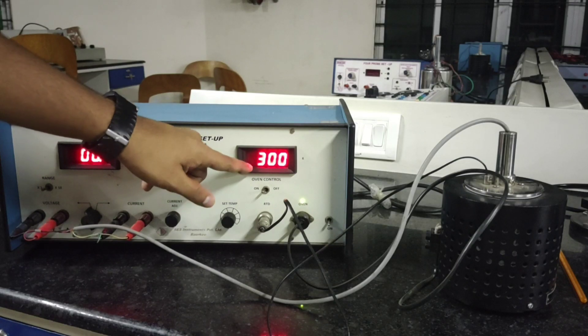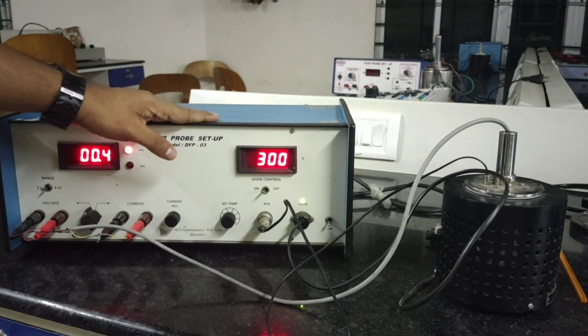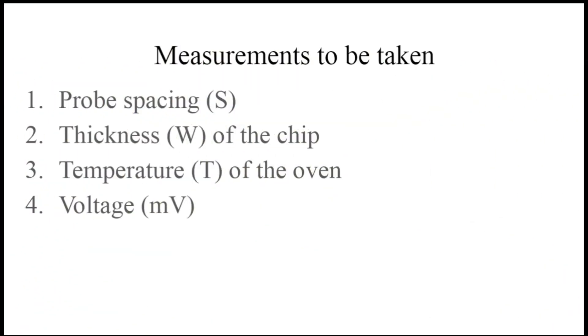These are the measurements which you have to take: the probe spacing, the spacing between the four probes, the thickness of the chip which is provided to you, the temperature of the oven, and the voltage in the millivolt meter.